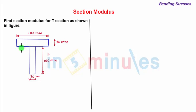So this is a beam whose cross section is of T-section as shown in the figure. The dimensions are given. So we start with the solution.